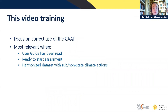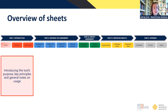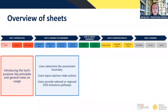In this video training, I will focus on the correct use of the climate action aggregation tool, which is most relevant when the user guide has already been read. The user is ready to start the assessment and already has a harmonized data set with sub- and non-state climate actions. In the tool, there is always a navigation bar on top of each sheet. In the introduction sheets — the red sheets — the tool's key principles are introduced and general notes on usage are given. In the blue sheets, defining the assessment, users determine the assessment boundary, insert their sub- and non-state actions, and provide the national or regional greenhouse gas emission scenario.